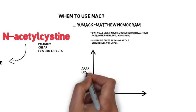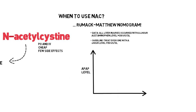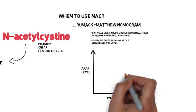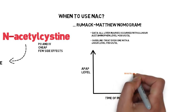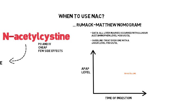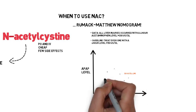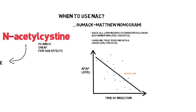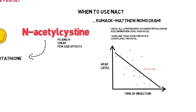In order to use the nomogram, you plot the acetaminophen concentration against time. You reference the 150 line, which shows what the concentration would have been at a given time with a hypothetical level of 150 micrograms per milliliter at four hours. If the concentration is greater than the 150 line, you treat with NAC; if not, you don't.